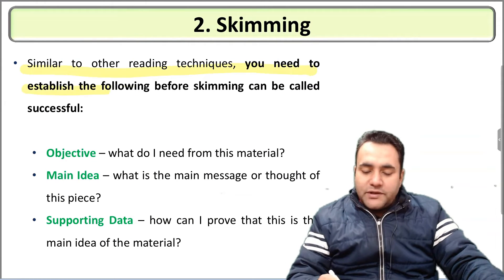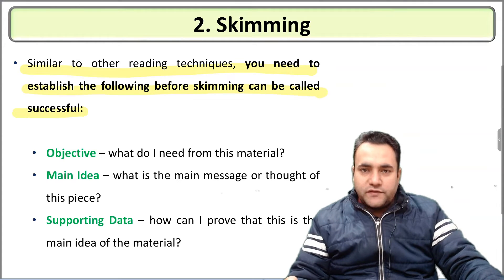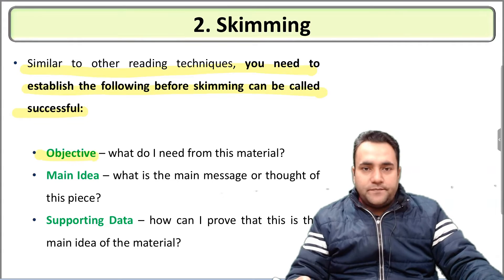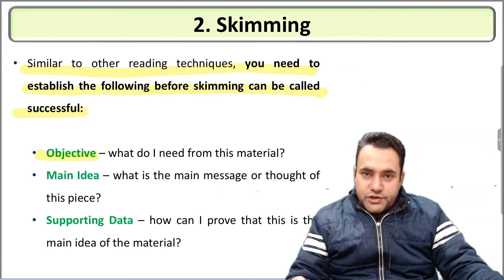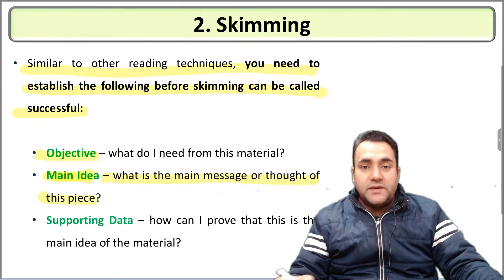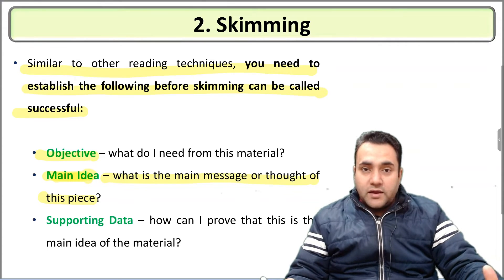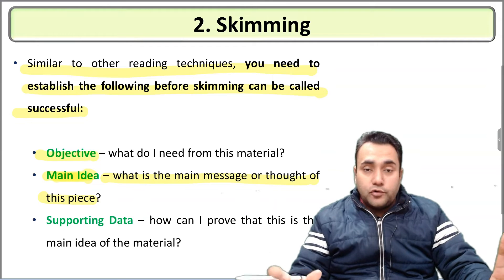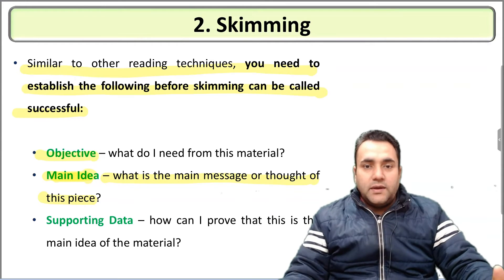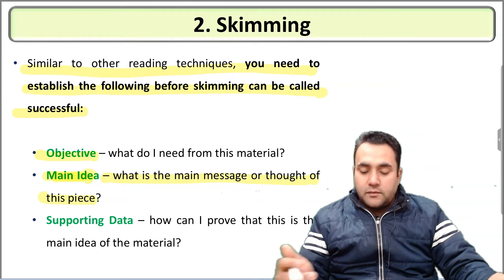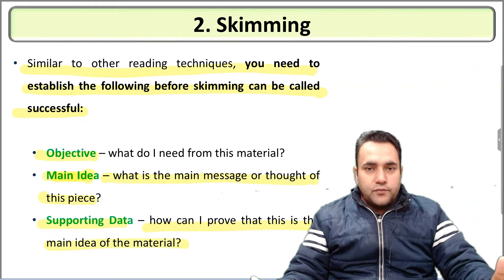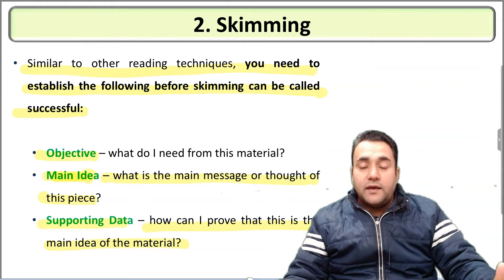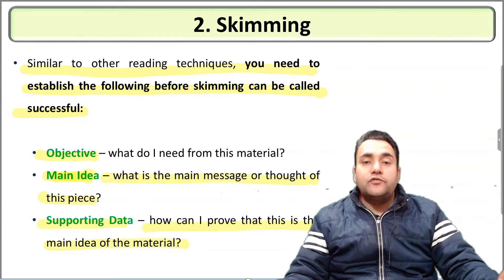Similar to other reading techniques, you need to establish three things before skimming can be successful. Number one is objective — what do I need from this material? Because you have read the material before, you have a clear objective to revise it or deepen certain information. Number two is the main idea — what is the main message or thought of the piece? This should be clear, because if you don't have the central idea, you will be scanning, not skimming. That is the major difference between scanning and skimming. Number three is supporting data — how can I prove that this is the main idea of the material?